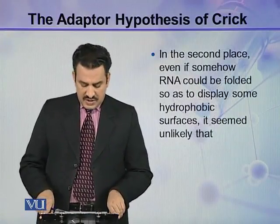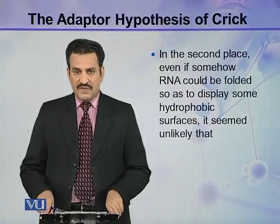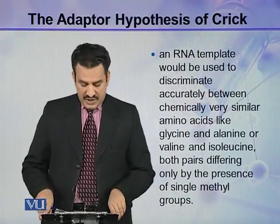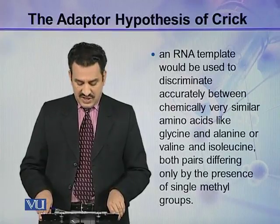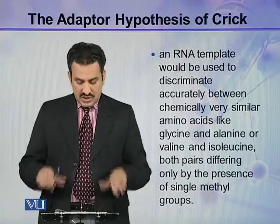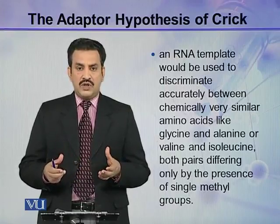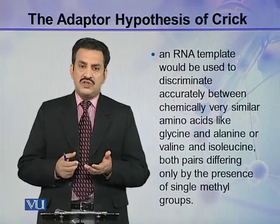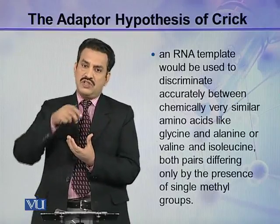In the second place, even if somehow RNA could be folded so as to display some hydrophobic surfaces, it seemed unlikely that an RNA template would be used to discriminate accurately between chemically very similar amino acids like glycine and alanine, or valine and isoleucine. These amino acids are very similar because they only differ by the presence of one methyl group. So how could these very similar amino acids be identified by hydrophobic fold patches present on the RNA?